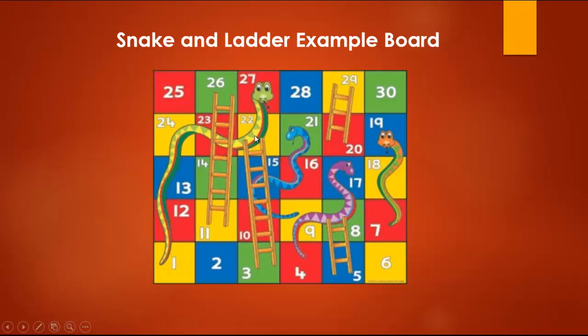Then I throw the dice and get a 6. I move 6 steps and come to cell 28. Then I throw the dice and get a 2, moving to cell 30. So that's three steps total: throw the dice and land on a ladder to 22, throw again to reach 28, then throw once more to complete the board.